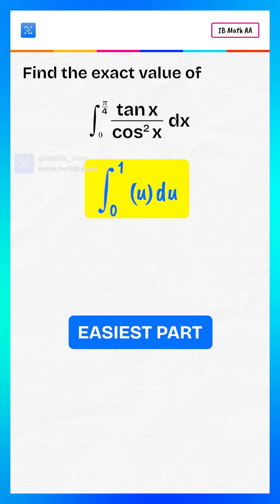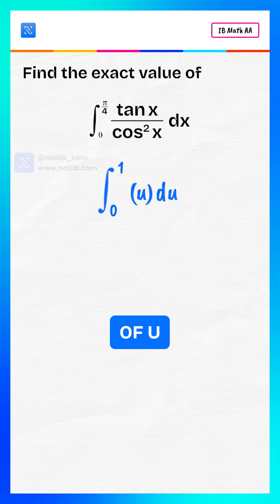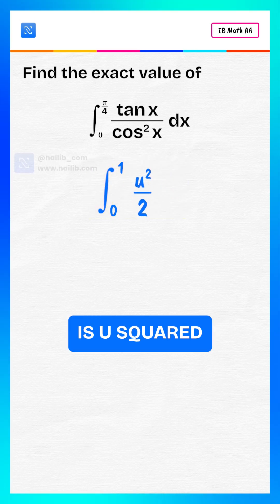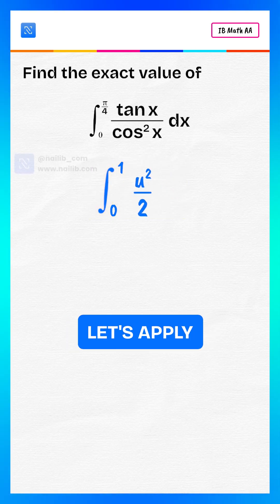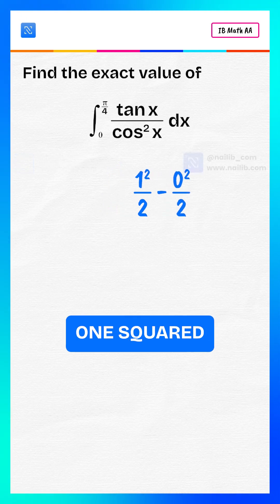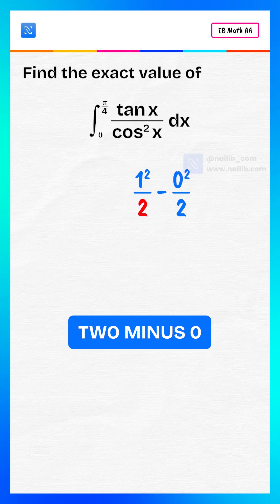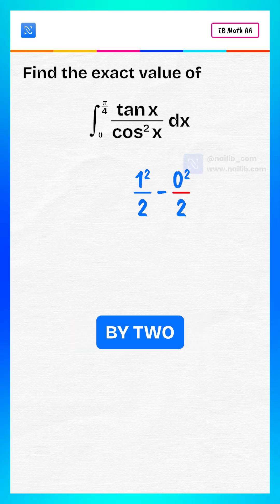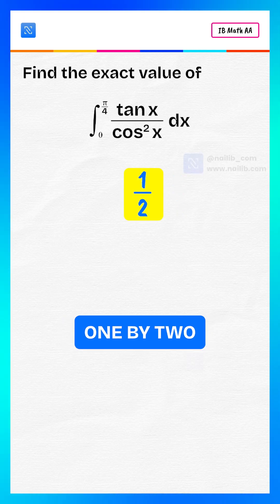Now this is the easiest part. The integral of u with respect to u is u squared divided by two. Let's apply the limits from zero to one. That gives us one squared divided by two minus zero squared divided by two, which equals one by two.